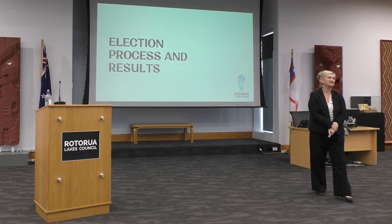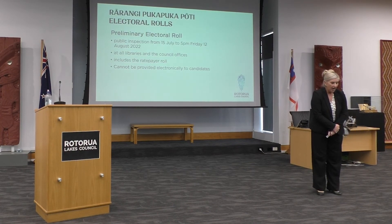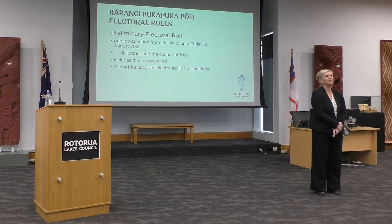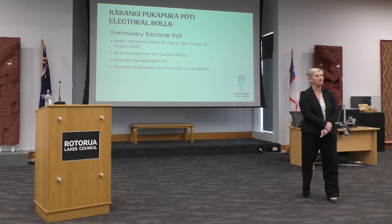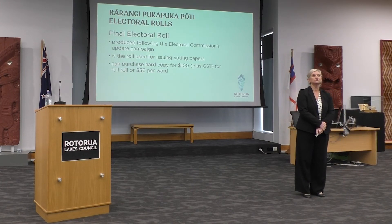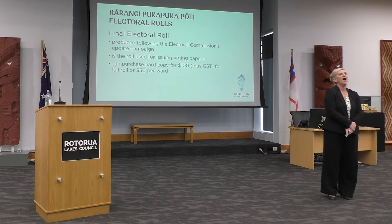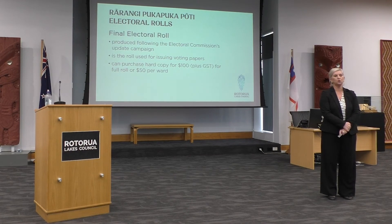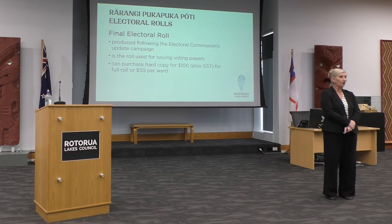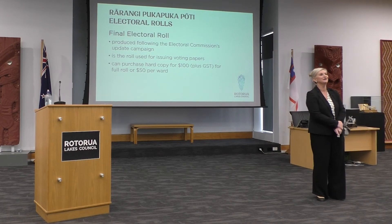On the election process and results: currently out for inspection is the preliminary electoral roll, available at the library and here in council offices. The final electoral roll will be updated after the 12th of August when the enrol-to-vote campaign has completed. It is that final electoral roll which is used to publish and send out your voting papers. If you want a copy, you can purchase a hard copy for $100, or just for the ward for $50.